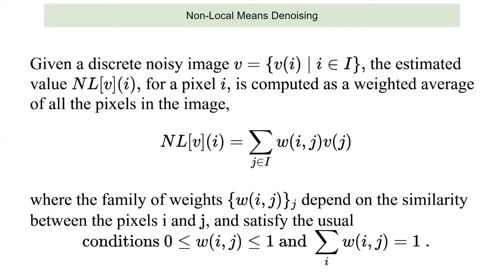This is how we can look at the formulation of non-local means, which I've adopted from the original non-local means paper. Say you represent all the pixels in a noisy image — then each pixel is represented as a weighted combination of all the other pixels in the image. The similarity is computed on the basis of a weight function, which we will see in the next slide.